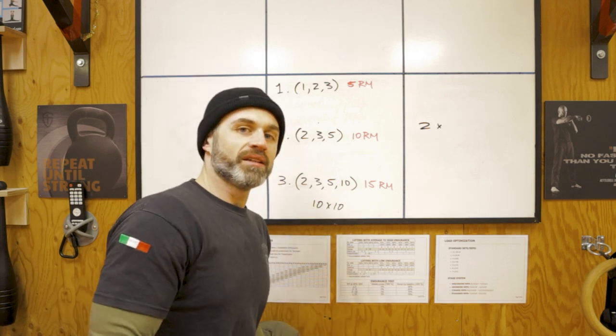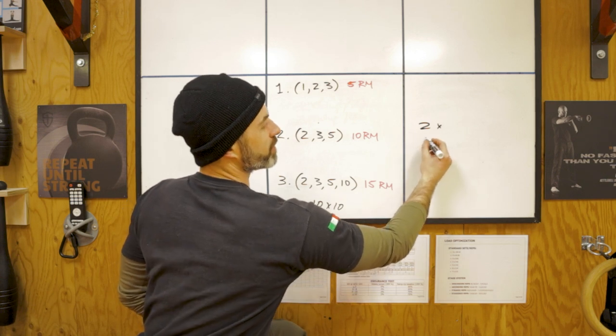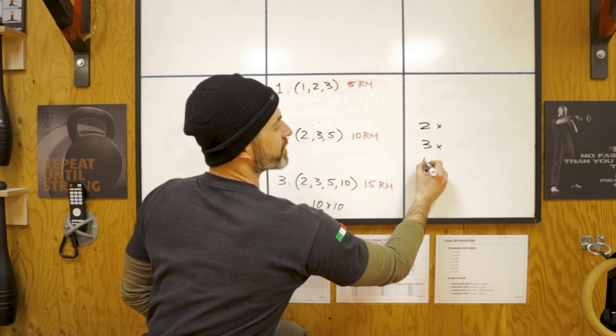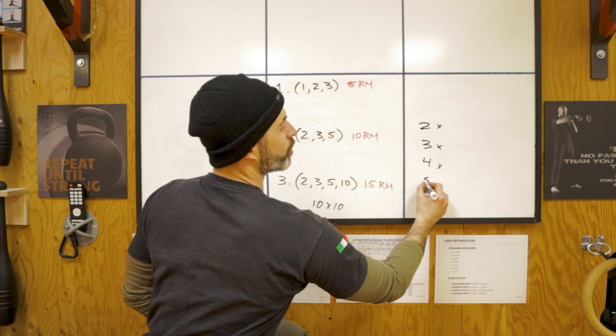Every week you will add an additional ladder. So week one, begin with two. Week two, go to three ladders. Week three, go to four, and week four, go to five ladders.